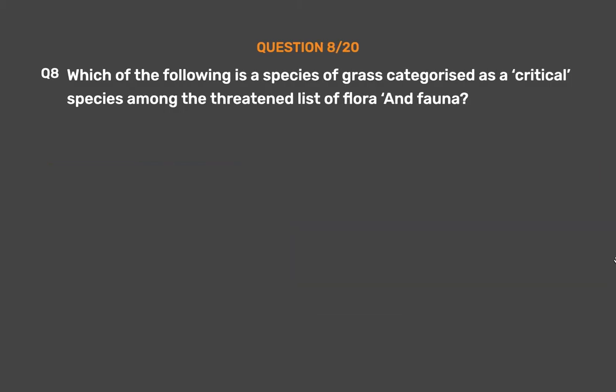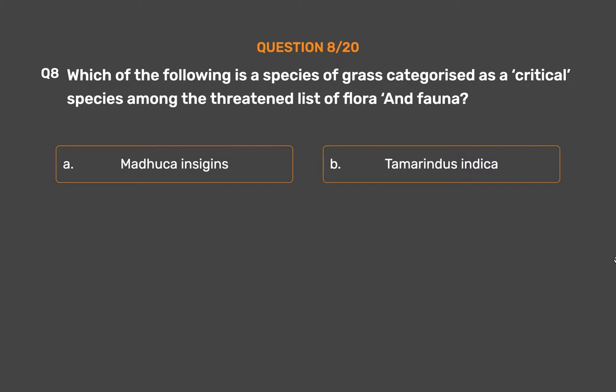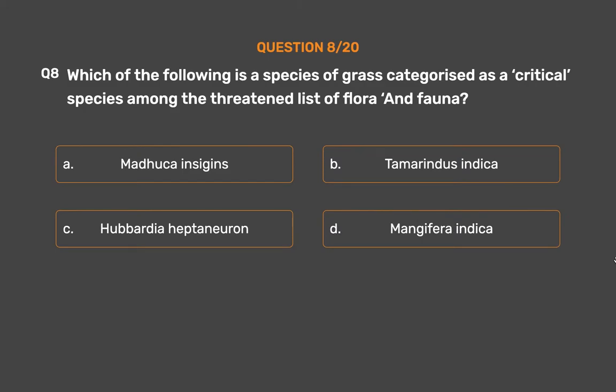Question number 8. Which of the following is a species of grass categorized as a critical species among the threatened list of flora and fauna? Option A: Madhuca insignis. Option B: Tamarindus indica. Option C: Hubbardia heptaneuron. Option D: Mangifera indica.